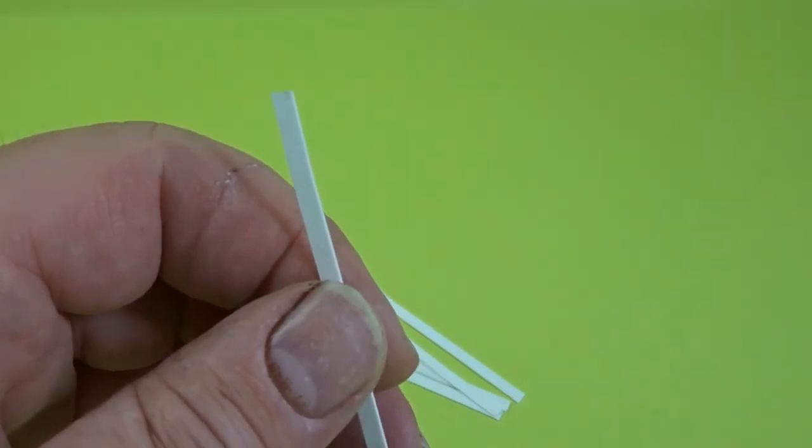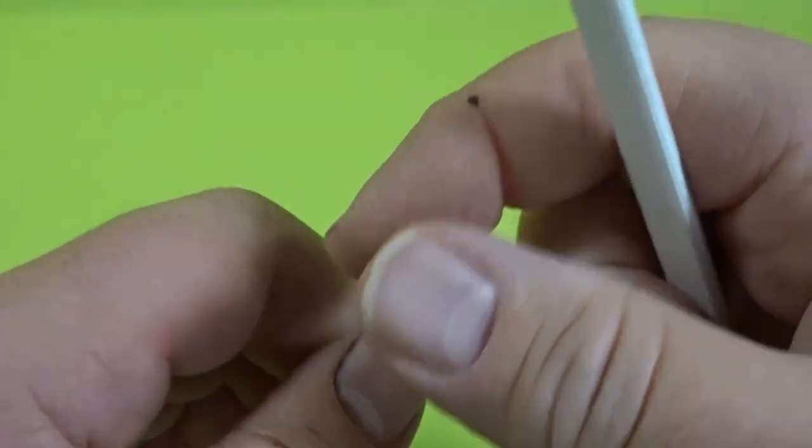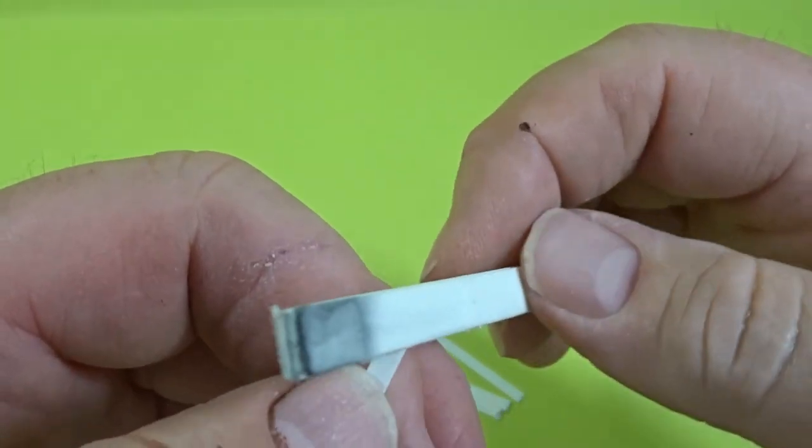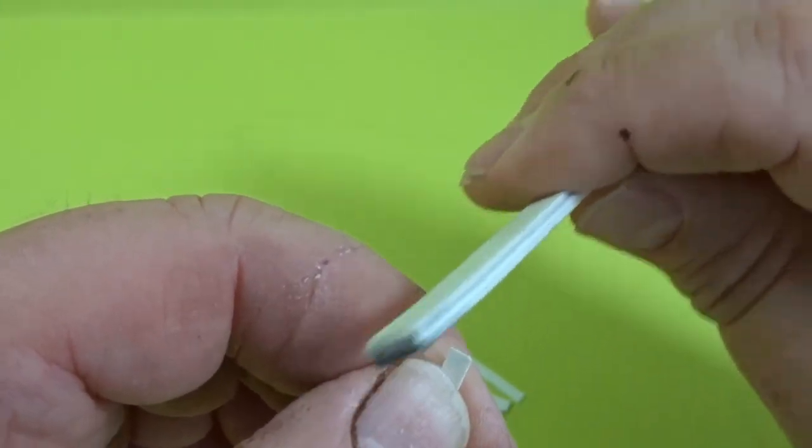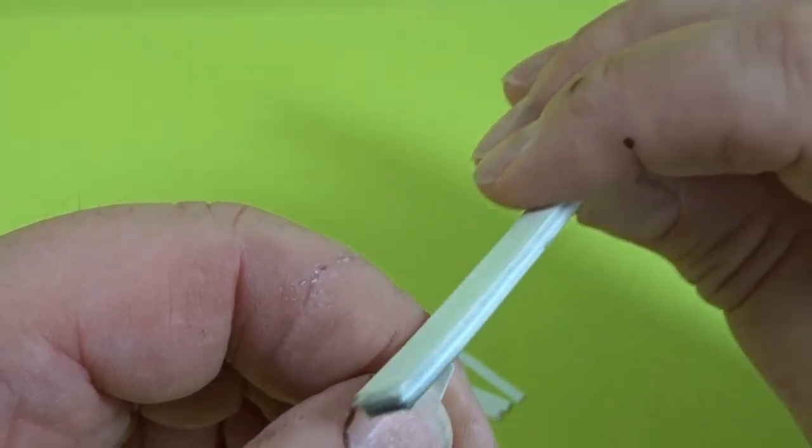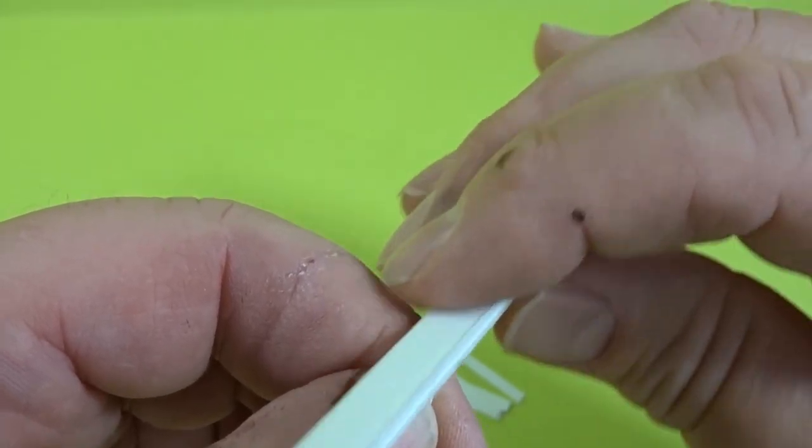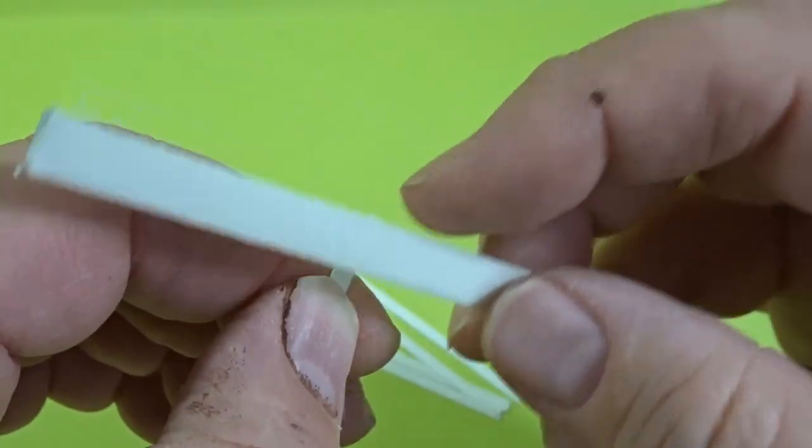So once you've done that, just round off the edges using a file or in this case a sanding stick, and it just makes it look a little bit more realistic.